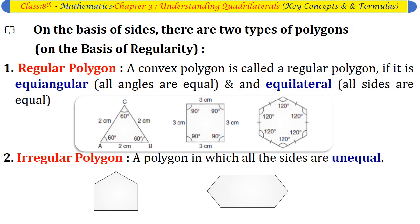There are two types of polygons: regular polygon and irregular polygon. Regular polygon: A convex polygon is called a regular polygon if it is equiangular and equilateral. Irregular polygon: A polygon in which all sides are unequal.